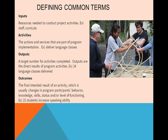Outputs are the products or results of your activities. Outputs are generally phrased as completed activities with a general number. For example, if your activity was to deliver language classes, your output would be 14 language classes delivered. You want to set your targets based on the resources and inputs available. If you only have three teachers, you set a target based on how much time those teachers have. Outputs are frequently the kind of numbers that grantees report out to their funders.